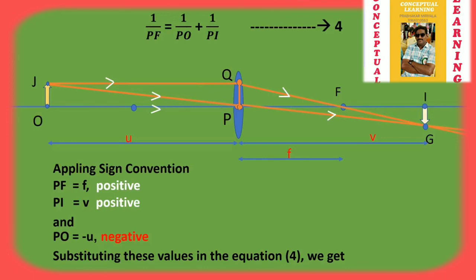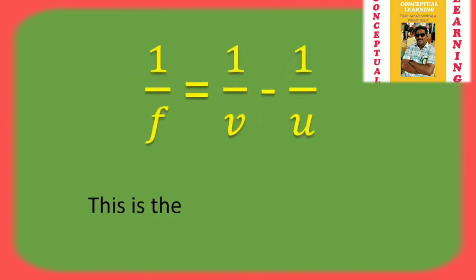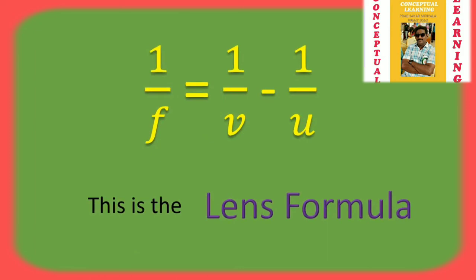The object distance PO is negative, as it is in the opposite direction to the incident rays. Applying these values into equation number 4, we get 1/F = 1/V − 1/U, which is the lens formula.